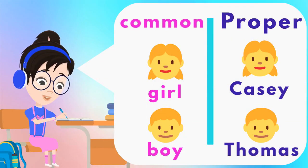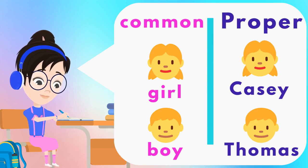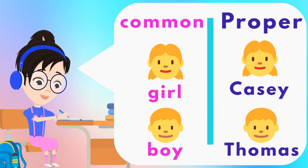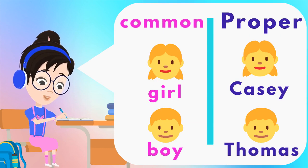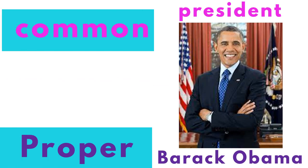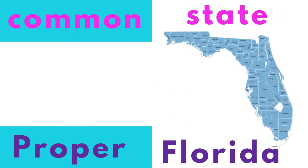Common noun: girl or boy. Proper noun will be their names, because the specific name for the girl is Casey, and the specific name for boy is Thomas. Here are more examples. Common noun: president. Proper noun: the name of the president — Barack Obama. In this case, common noun is the state, and the proper noun, which is the name of the state, is Florida.